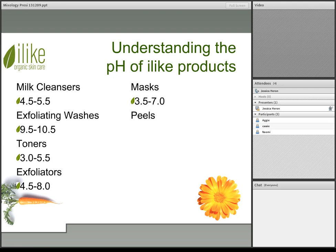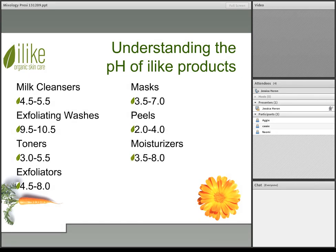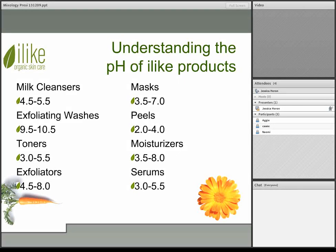Our peels range on a more acidic level, 2.0 to 4.0, with different peels having different acidity ranges — refer to our product pH list for exact values. Moisturizers also have a wide range, from an acidic 3.5 to an alkaline 8.0, for different skin conditions and types. Serums have a more acidic range of 3.0 to 5.5 — usually the last product applied before the moisturizer — helping to maintain proper skin pH and also serving as a solution for balancing pH after using something more alkaline on the skin.